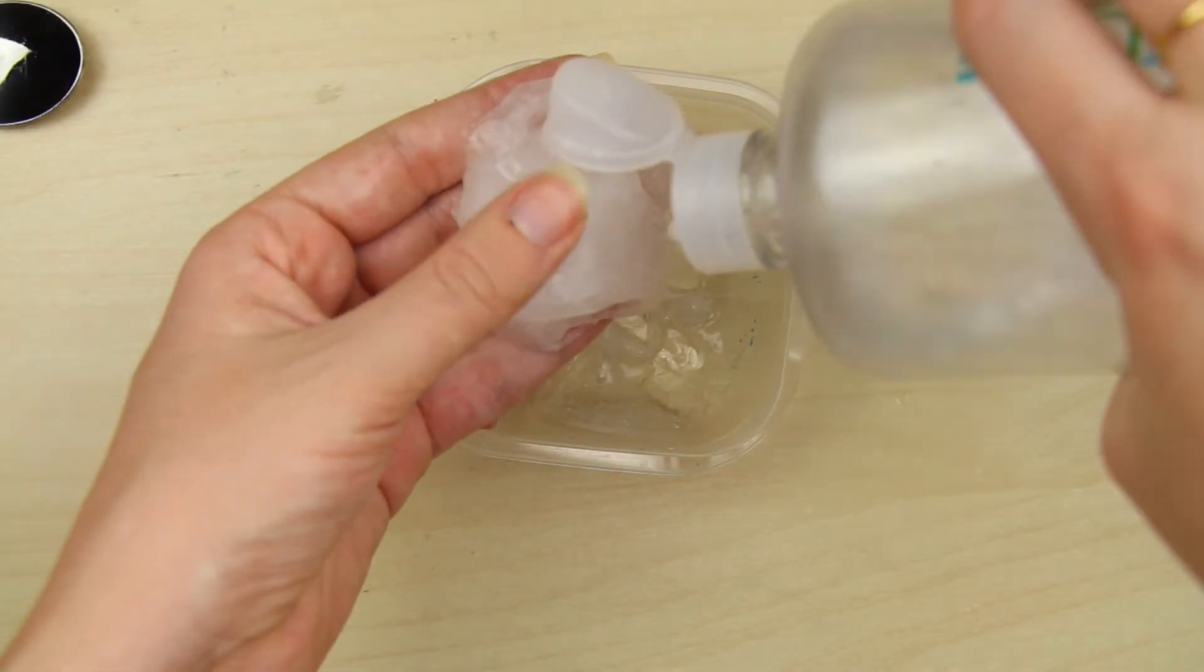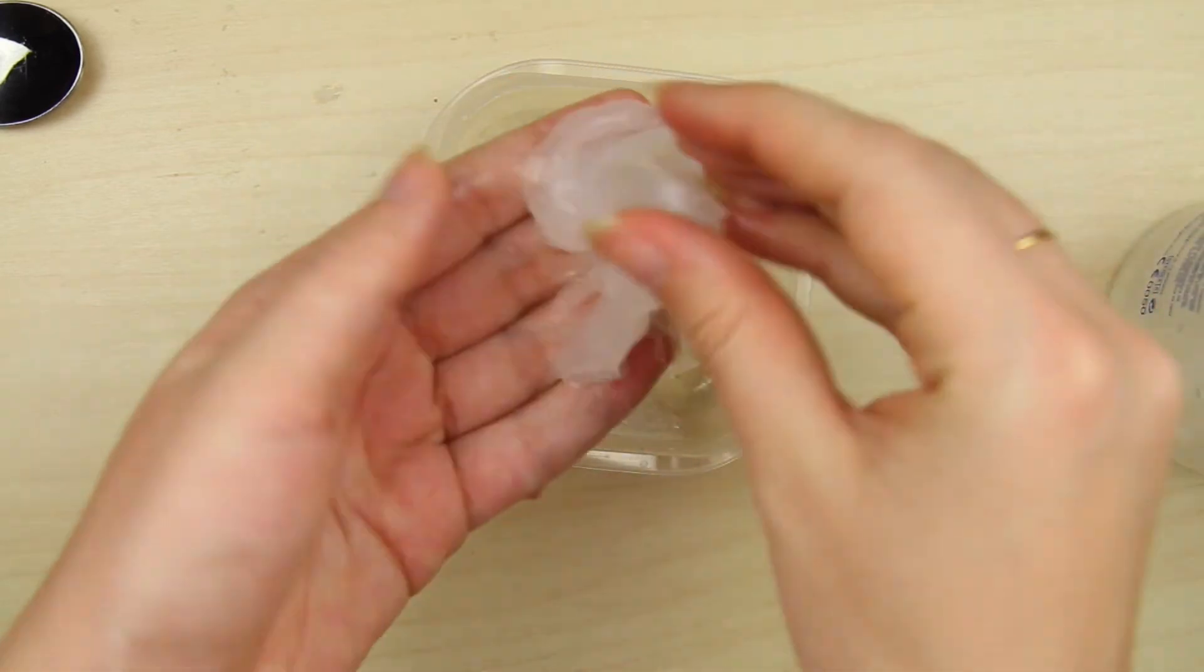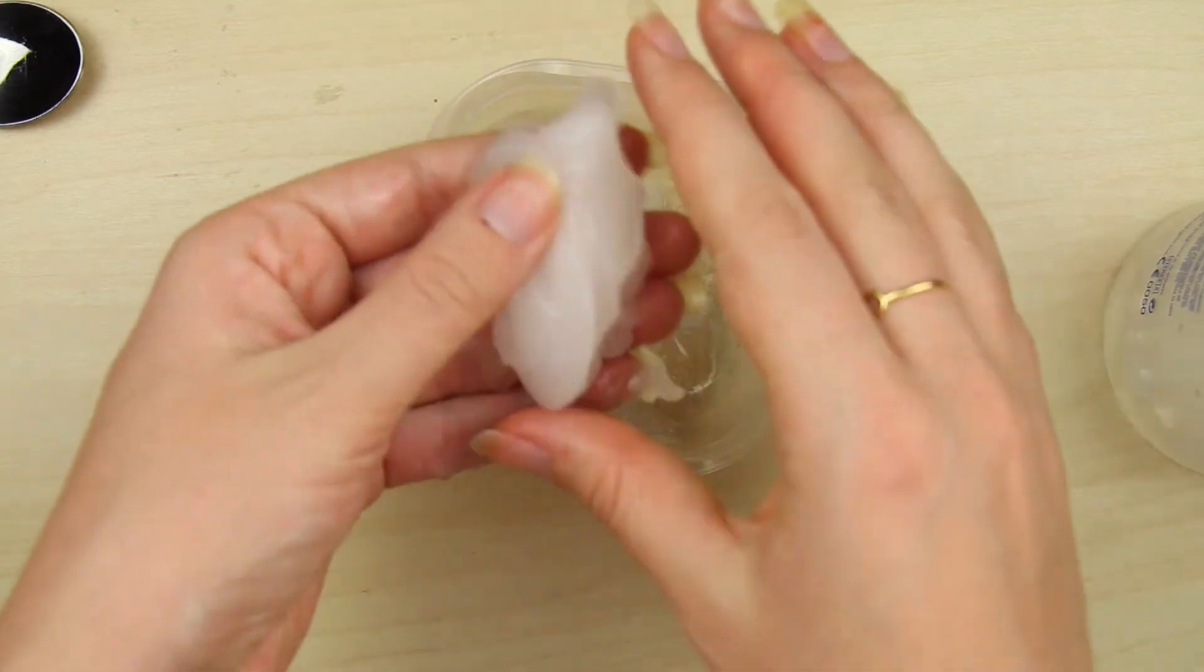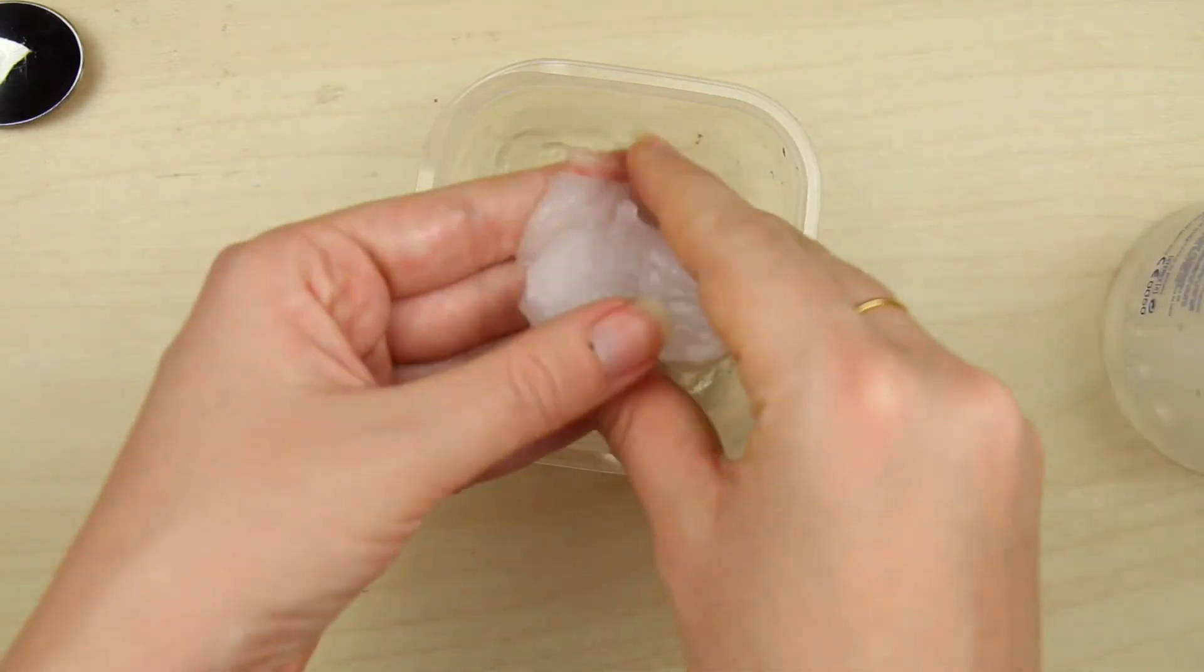Now wet your hands a little bit with the contact solution and start stretching the slime. It will start to become less sticky and more slimy. Does that make any sense?